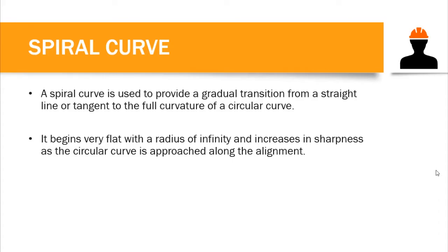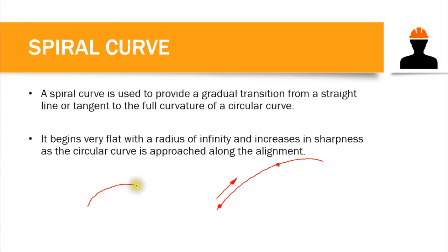In other words, a spiral curve has a changing radius. From the beginning of our spiral curve the radius is very large, giving a smoother curvature, and it becomes sharper and sharper until it approaches the circular curve. There is a gradual transition — the curvature changes and the radius changes continuously. Unlike a simple or compound curve which has a constant curvature, a spiral curve has a rate of change in curvature.